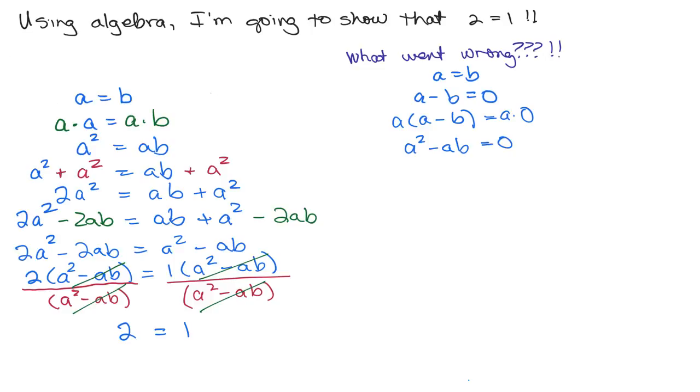So here comes the problem, look right here. I divided by A squared minus AB. Well, that means I divided by 0, and that is the problem.